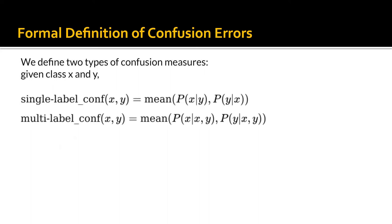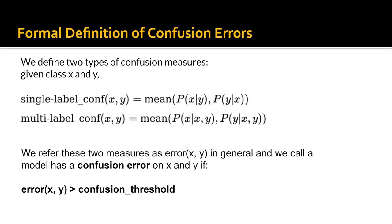For the formal definition, we define two types of confusion measures. Single-label confusion, which is the average of the DNN's conditional probability of mispredicting class X to Y and the reverse, and multi-label confusion, which is the average of the DNN's conditional probability of mispredicting the presence of both class X and Y, given only class X but not class Y in the image, and the reverse. We refer to these two measures as error(x, y) in general, and we call a model has a confusion error on X and Y if this value is larger than a specified threshold.